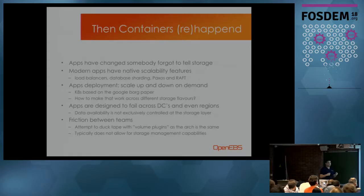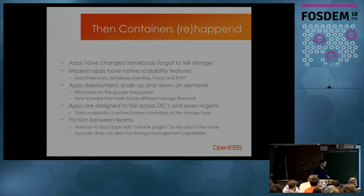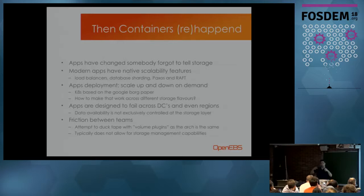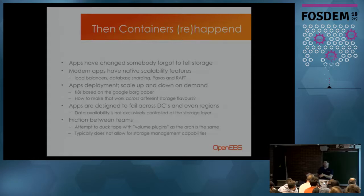Kubernetes is based on a Google Borg paper — if you haven't read it, it's a very interesting paper. If you look at how Kubernetes operates with workloads that can come and go at any given time, persistent or not, you wonder how do you make that work with your storage system — let alone with different storage systems at different regions, different locations, different customers. With Kubernetes we have basically tarballs on steroids — compute, storage, network, everything confined in a Docker image.